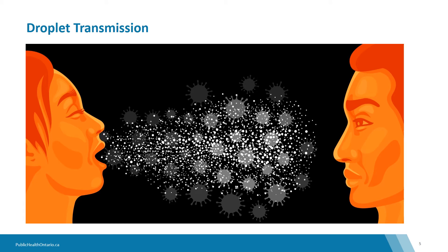Droplet transmission is when infection is spread through exposure to virus-containing droplets exhaled by an infectious person. Once exhaled, the concentration of droplets decreases by fallout from the air, with the largest droplets falling first and smaller particles diluting in the growing volume of air. As a result, transmission is most likely when someone is close to the infectious person, generally within about 2 meters or 6 feet.